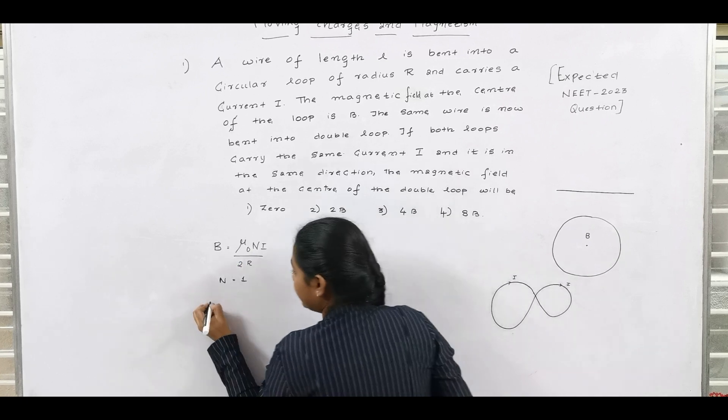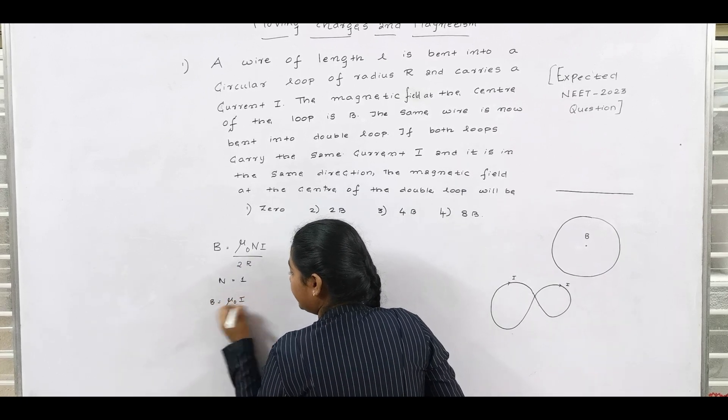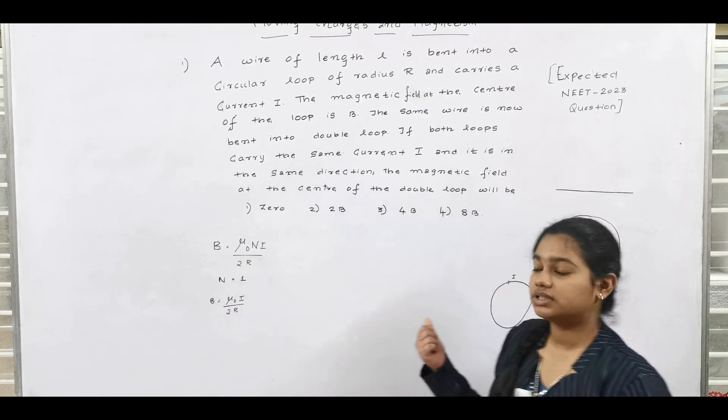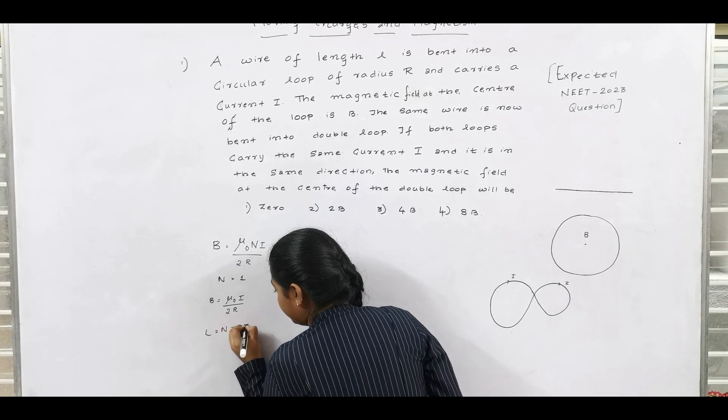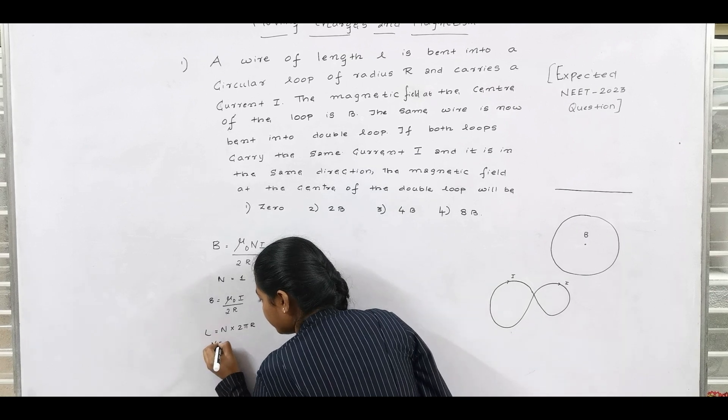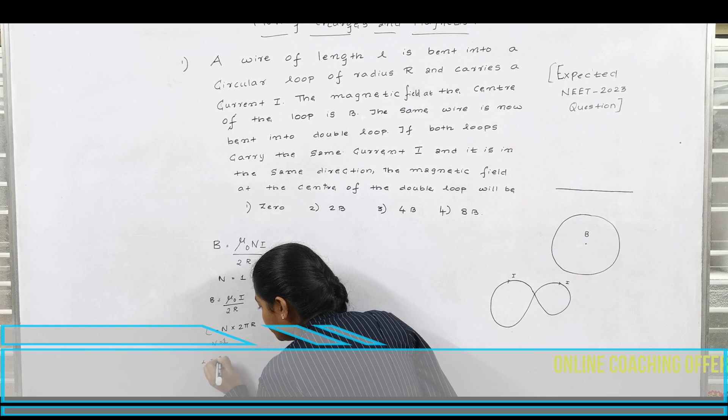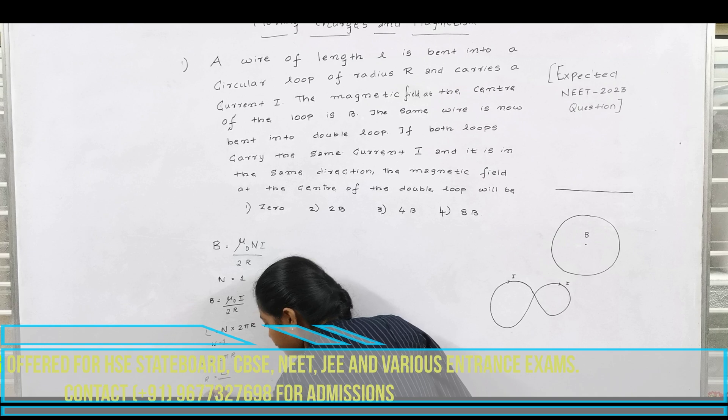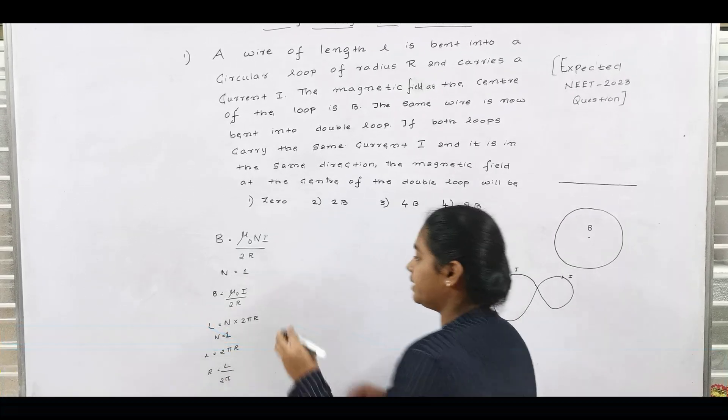n is equal to 1. If we substitute it in this equation, we get B is equal to mu naught i by 2r. And you know that, for the length of the circular loop, L is equal to n into 2 pi r. So here the value of n is equal to 1. So L is equal to 2 pi r. From this we can get r is equal to L by 2 pi. Now substitute the value of r in equation 1.